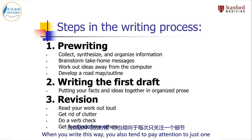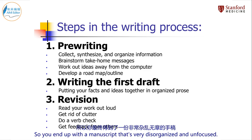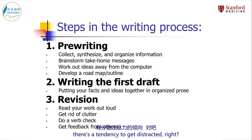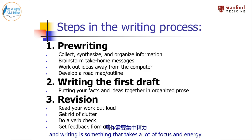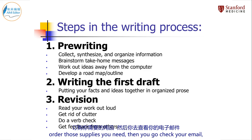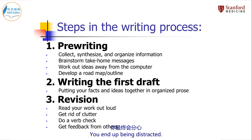This is a painful and inefficient way to write because you're not actually doing any writing — you're just fishing around for information. When you write this way, you also tend to pay attention to just one detail at a time and you lose the big picture scope of the story, so you end up with a manuscript that's very disorganized and unfocused. And of course, when you're toggling over to Google or PubMed, there's a tendency to get distracted. You're taking your focus away from writing, and writing is something that takes a lot of focus and energy. Once you're over to Google, well, you might as well go to Amazon and order those supplies you need. Then you go check your email, then you check Facebook, then Google News — you end up being distracted.